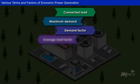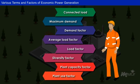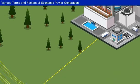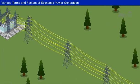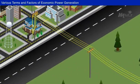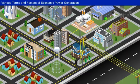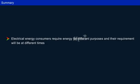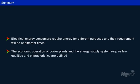Based on the above terms and factors, Mr. Sam can easily decide the type and rating of generating plant in order to meet the demand of Bourke City with economic power generation. In this lesson, you have learned that electrical energy consumers require energy for different purposes and their requirement will be at different times, and the qualities and characteristics that are required for the economic operation of power plants and the energy supply system.